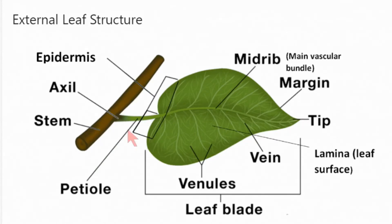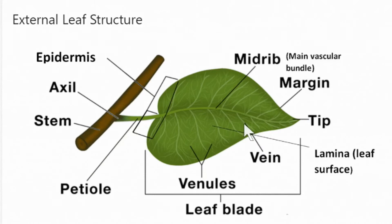The petiole extends from the axil. The extended petiole that passes in the middle is called the midrib. The veins of the leaf go from the midrib, and these tiny lines that pass from the vein are known as venules.